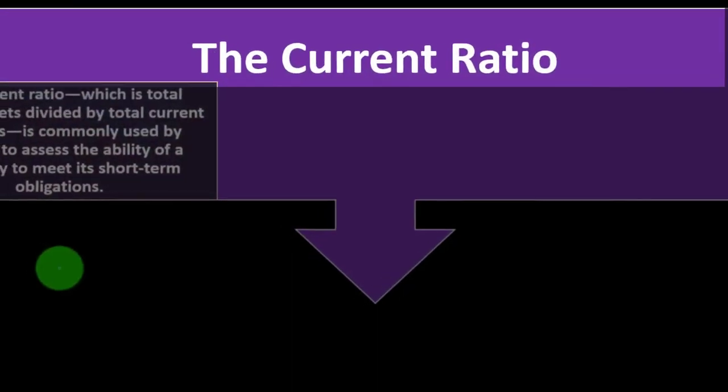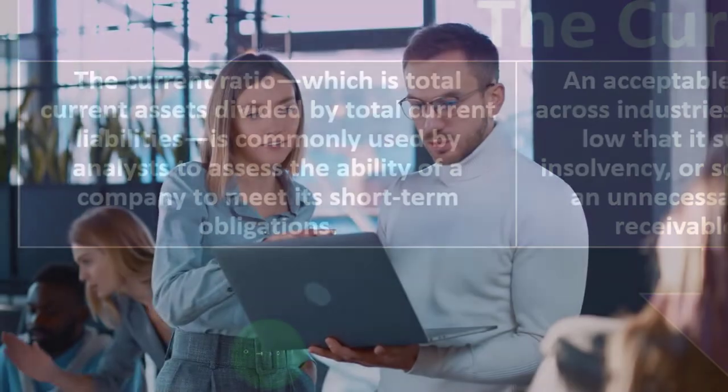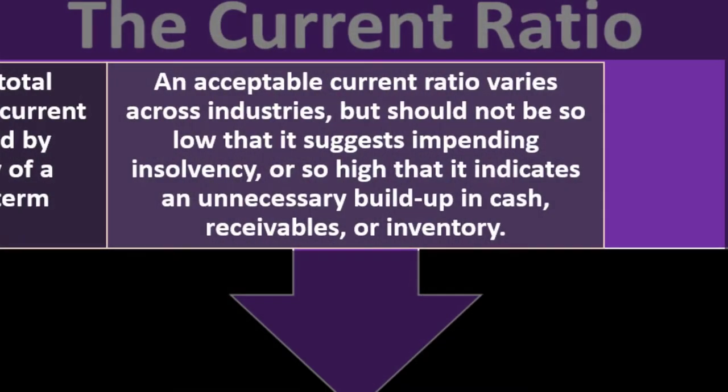A key ratio is the current ratio: total current assets divided by total current liabilities. It is commonly used by analysts to assess the ability of a company to meet its short-term obligations. The higher the number, the better positioned the company is to pay off its liabilities. An acceptable current ratio varies across industries, so you need to know the industry standard to assess whether the ratio is appropriate.